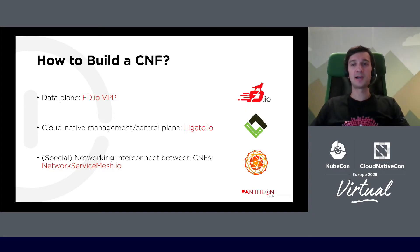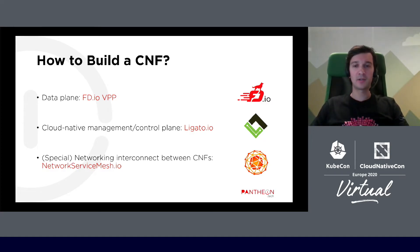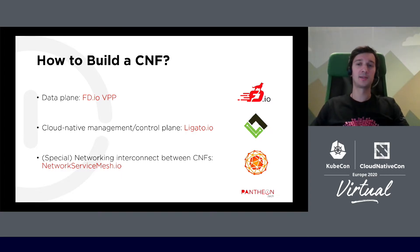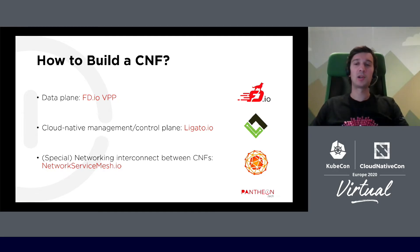So how can we build a CNF? In order to do that, we need to address three main challenges. First, we need to have a data plane which can provide directional network functionality. An excellent open source choice for that is the universal FDIO VPP data plane. Then we need to build a cloud native control and management for it, and for that Ligato.io is a very good open source framework.